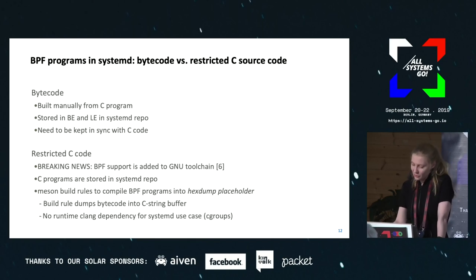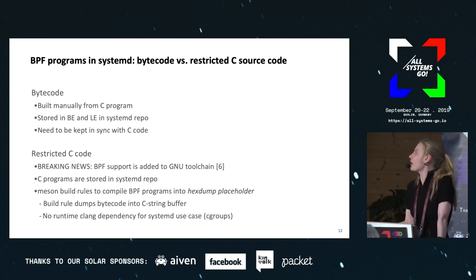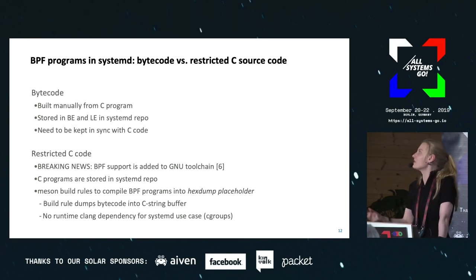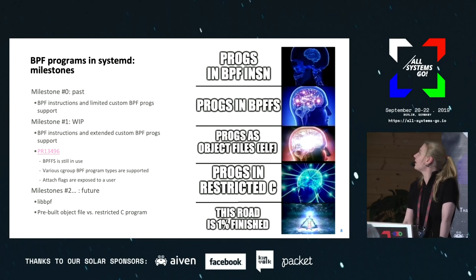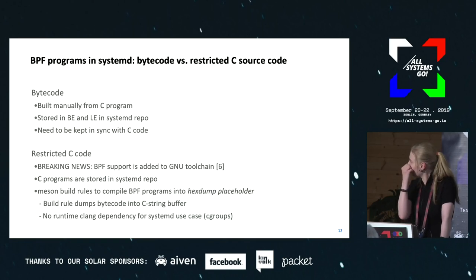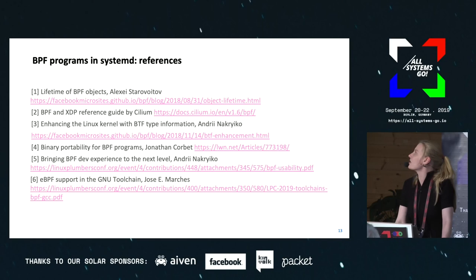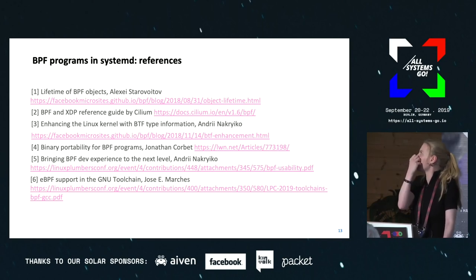In terms of implementation details: we can create a Meson build rule that compiles C code into a C string buffer, and with LibBPF we can read that bytecode from the buffer. That would be milestone four: systemD with LibBPF programs stored as restricted C. If you want to dig more into this, I really like the Cilium guide — a great in-depth overview if you really like the technology. That's it — questions?